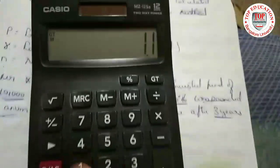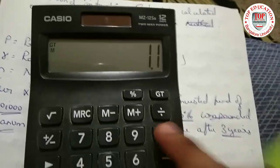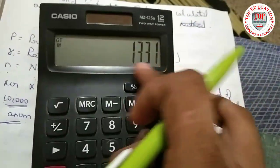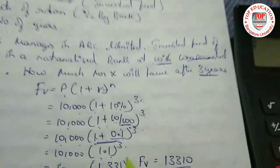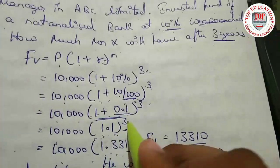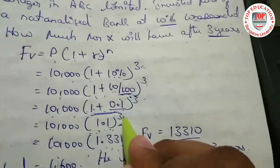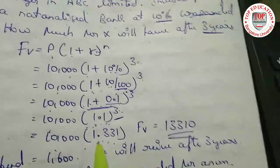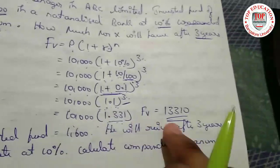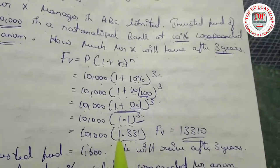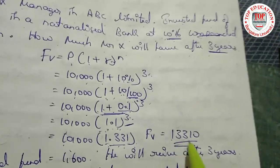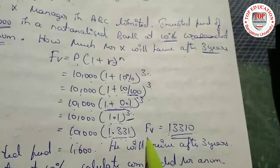Now 1.1 into 1.1 into 1.1 — we multiply 1.1 three times to get 1.331. As you can see on the calculator, 10,000 multiplied by 1.331 gives us 13,310. That is the future value. If not clear, rewind and see.